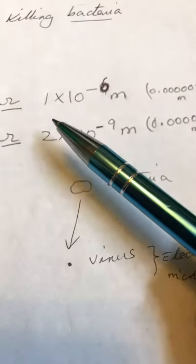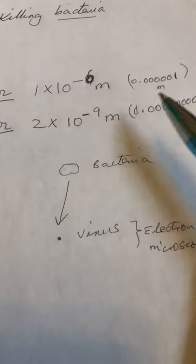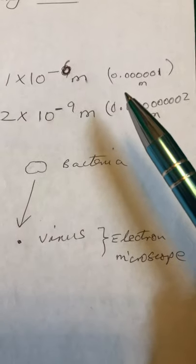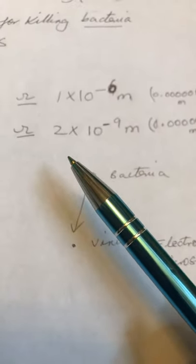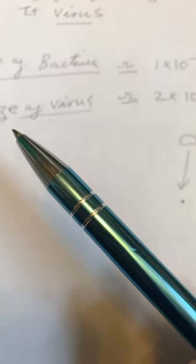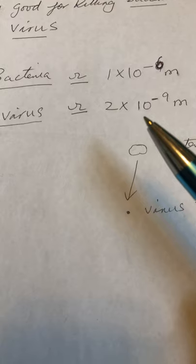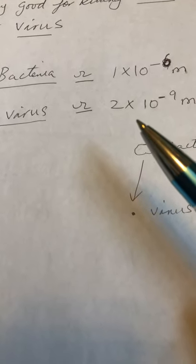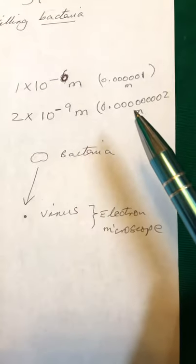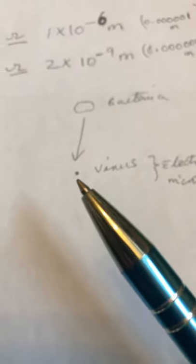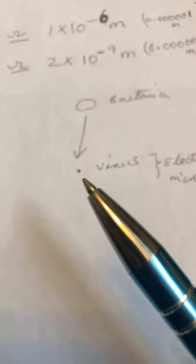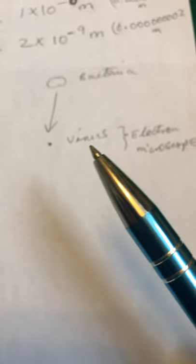The size of bacteria is roughly 10 to the minus 5 meters — I put down the zeros just to give you a guideline. A virus, in comparison, is roughly 10 to the minus 9 meters — if you put nine zeros after the decimal, it is far smaller. You can see bacteria under a regular microscope, but a virus can only be seen under an electron microscope, which shows just how tiny it is.